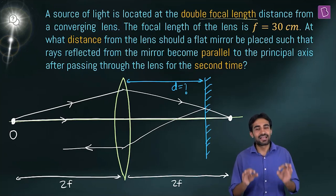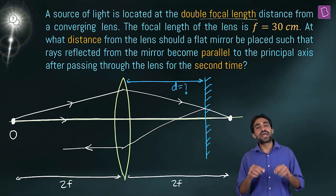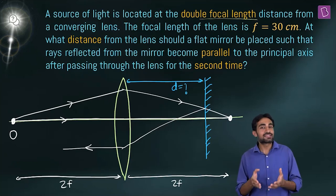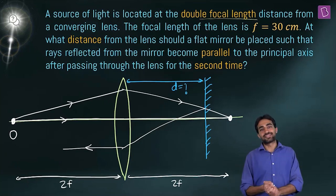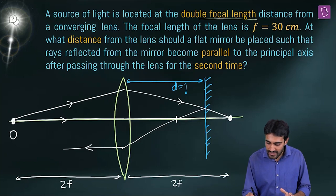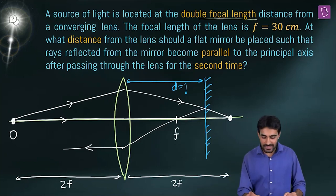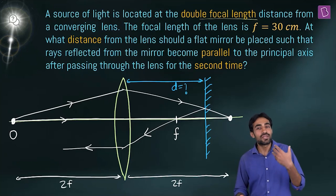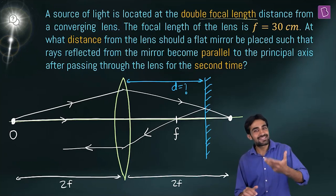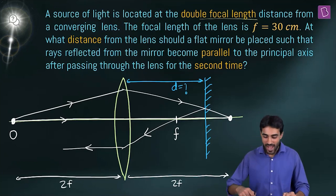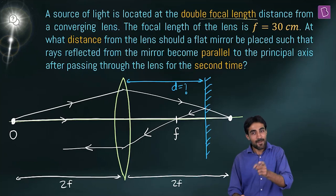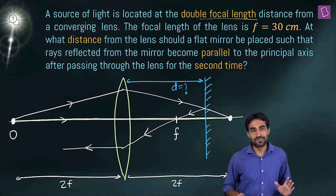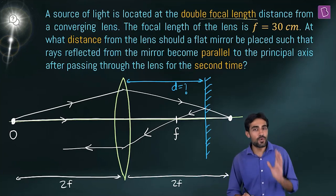The key concept: when an object is at the focus of a lens, rays after refraction become parallel to the principal axis. So our reflected light from the mirror must pass through the focus. This means the mirror must be placed such that it redirects light through the focal point.